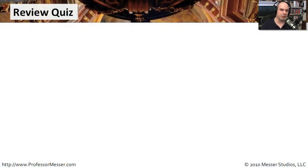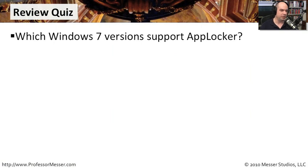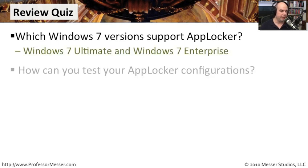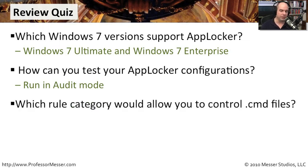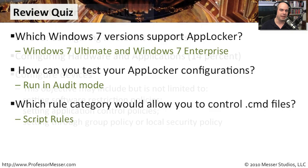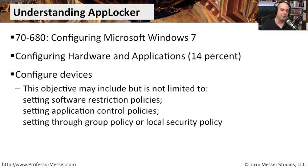Let's review some of the things we've learned in this video. First question: which Windows 7 versions support AppLocker? Only two — Windows 7 Ultimate and Windows 7 Enterprise. Next question: how can you test your AppLocker configurations? You'll want to take advantage of running an audit mode and looking at your event log to see exactly what might have been blocked. Last question: which rule category would allow you to control CMD files? Script rules can block those particular kinds of files from executing. That covers the information we needed to know about AppLocker — turning it on, creating rules, auditing, and doing some automation.